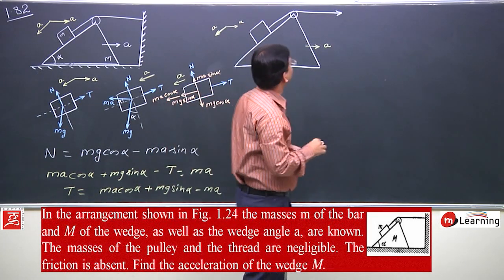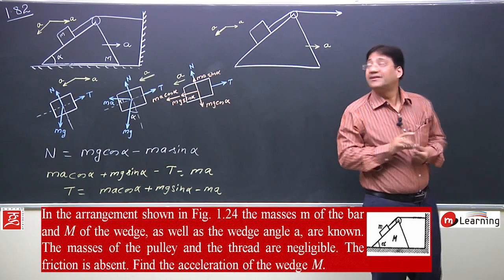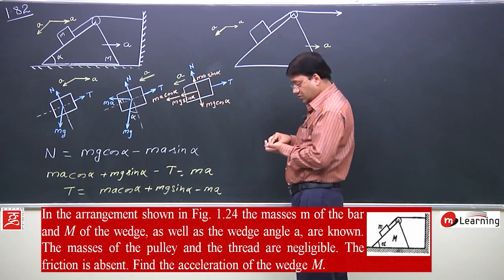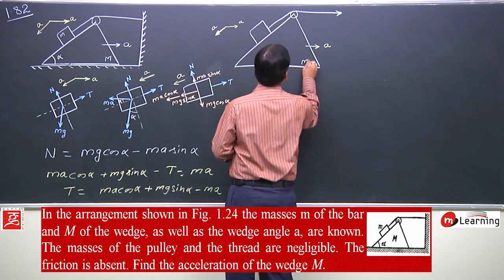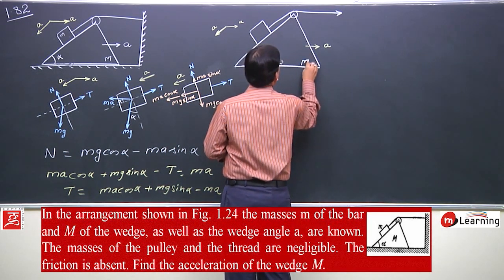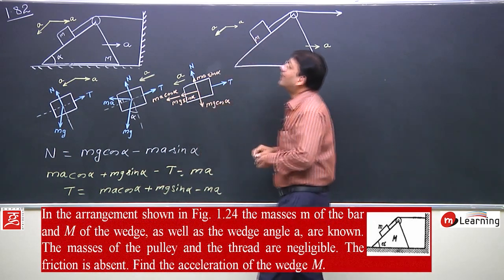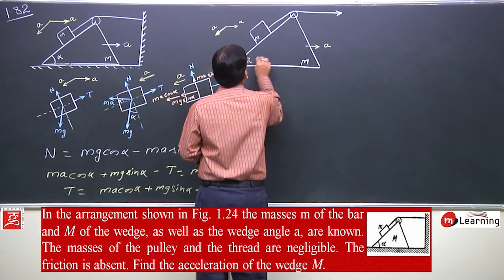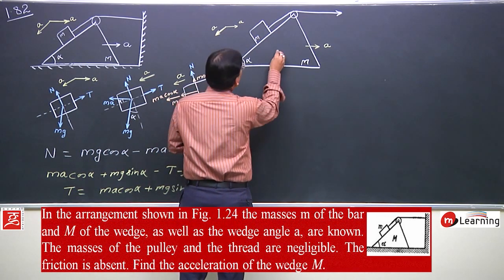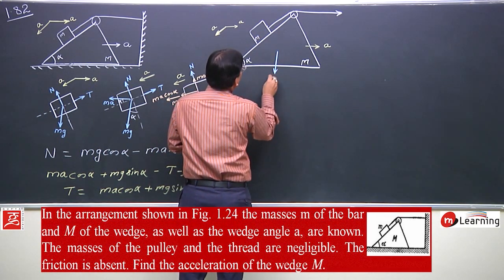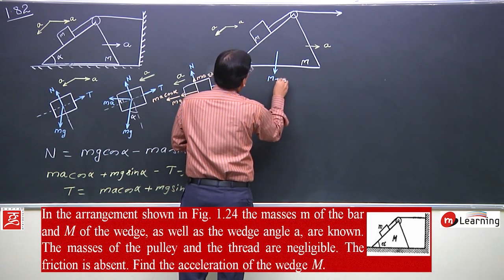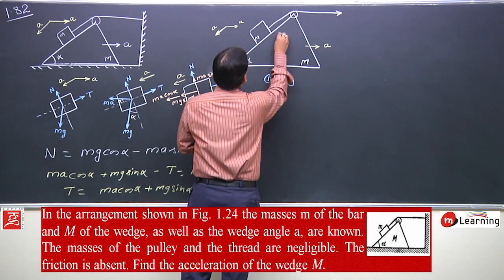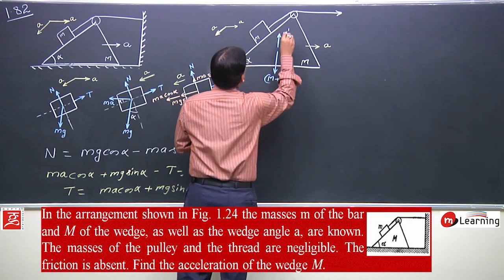The internal force between the two masses is handled via tension. We have another force, that is (capital M plus small m) into g, and the normal reaction N dash, for the combined free body diagram of the wedge along with the bar.